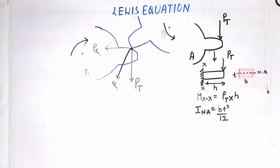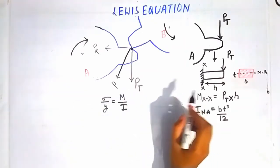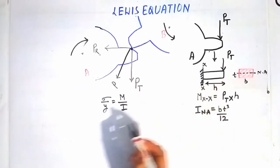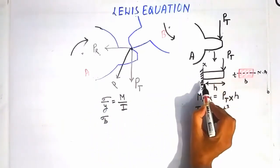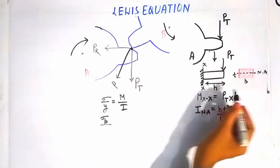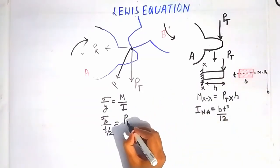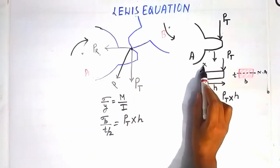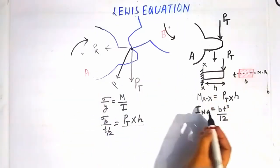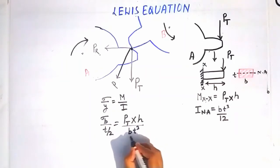Using the bending stress equation σ/Y = M/I, and applying it at section XX: sigma is the bending stress σB, Y is taken as T/2, M is PT × H (the moment at XX), and I is the second moment of area about the neutral axis, which equals BT³/12.